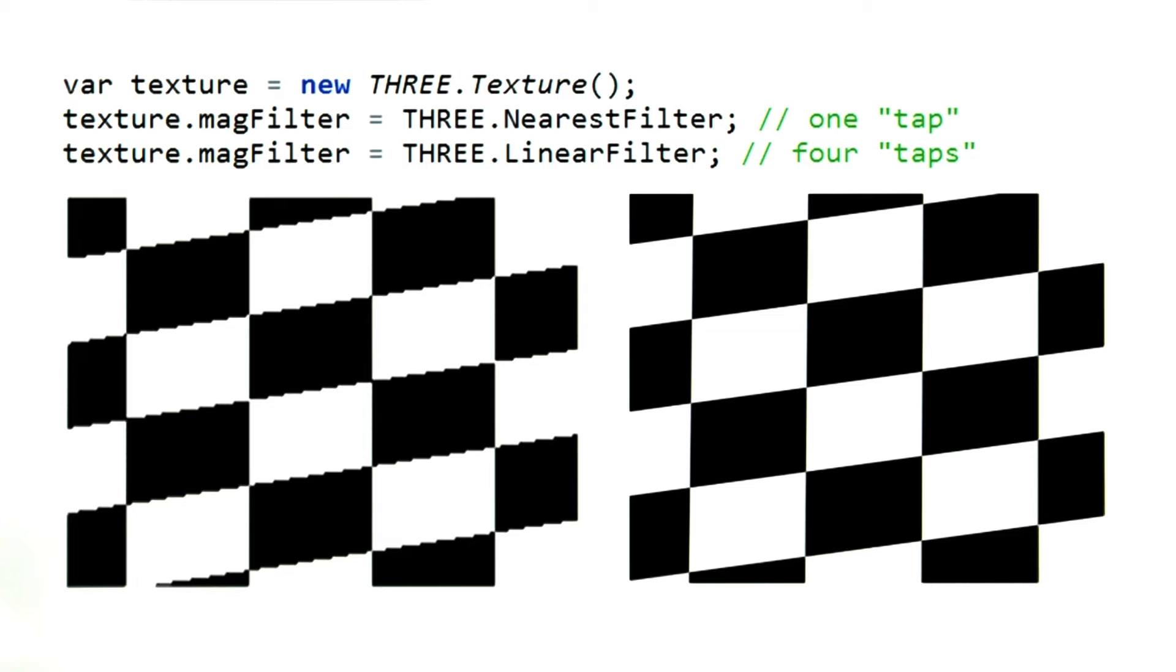In Three.js, setting the filtering to be nearest or linear is straightforward. There's not a lot to it. Using bilinear interpolation causes more taps to occur. That is, more texture samples to be retrieved, but it's usually what you want.